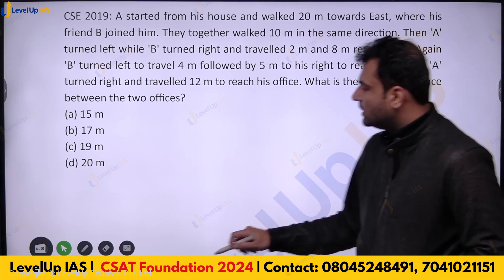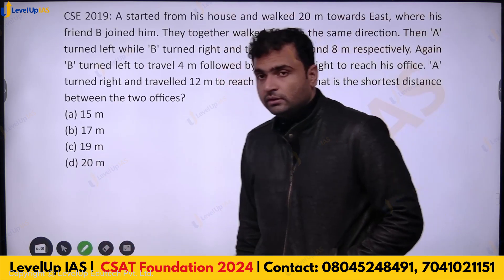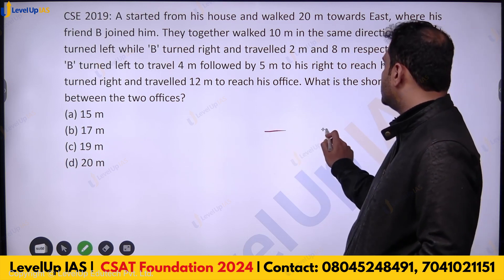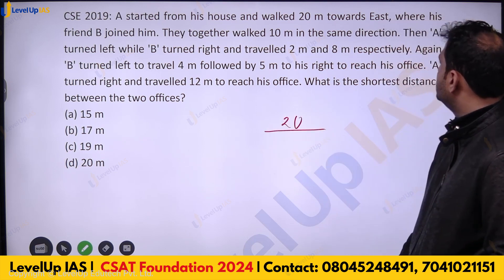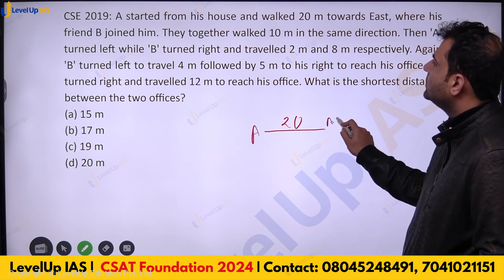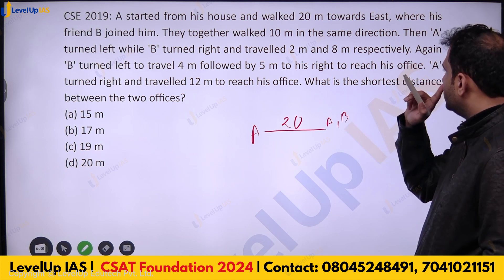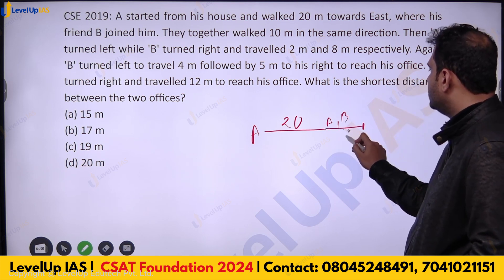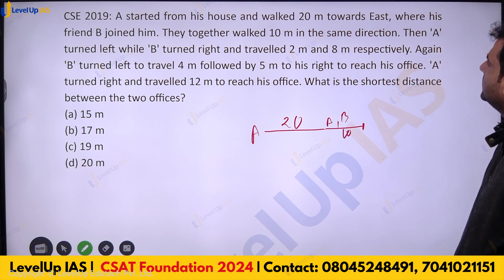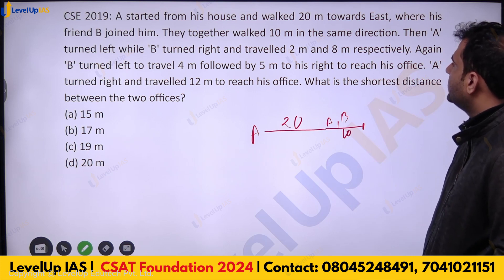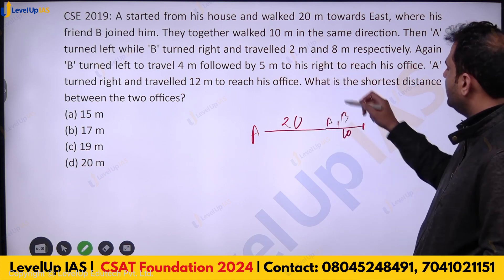Next: A started from his house and walked 20 meters towards east, where his friend B joined him. Together they walked 10 meters in the same direction. Then A turned left while B turned right. A turned left and travelled 2 meters, while B turned right and travelled 8 meters.